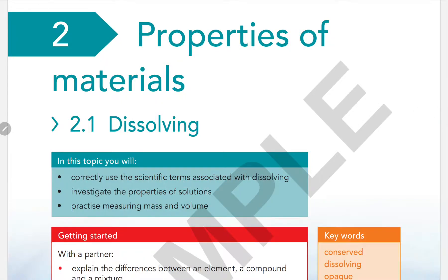Hello students, today we are going to learn about properties of materials. This is the first unit in chemistry. Our first topic is about dissolving. We will correctly use the scientific terms associated with dissolving, investigate the properties of solutions, and practice measuring mass and volume.